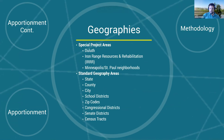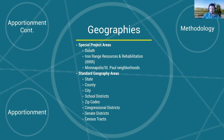A little background on the geographies that are mapped. They have two main areas: special project areas, which include Duluth and its neighborhoods, Iron Range Resources and Rehabilitation (IRRR) covering everything from school districts to counties to the overall IRRR boundary, and Minneapolis and St. Paul neighborhoods including communities in the metro area.